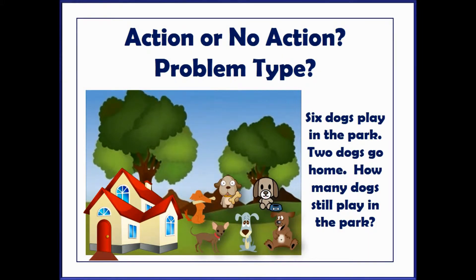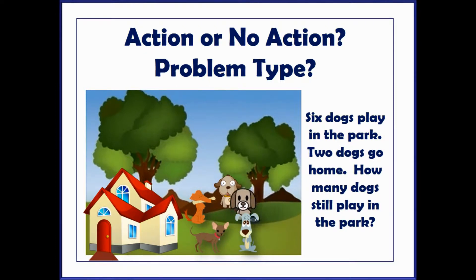Let's try another one. Six dogs play in the park, two dogs go home — how many dogs are still playing in the park? Action or no action? Again, in this problem there is an action of the dogs physically going away. So we know it's an action problem. We also know how many dogs are left in the park is our unknown. So again, our result is unknown.